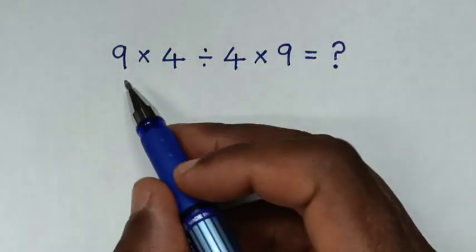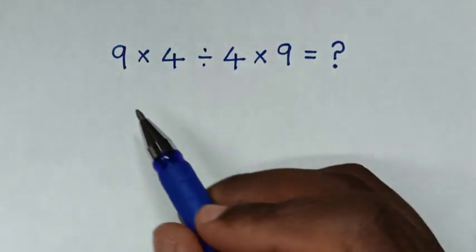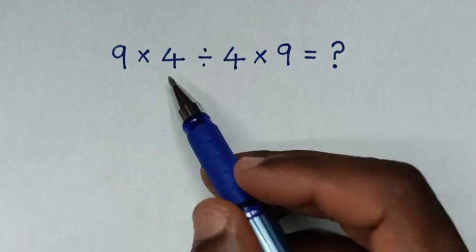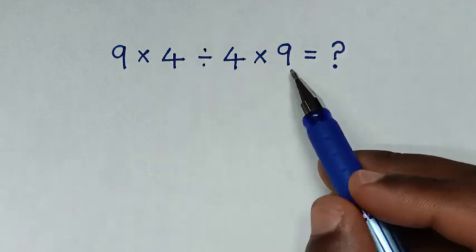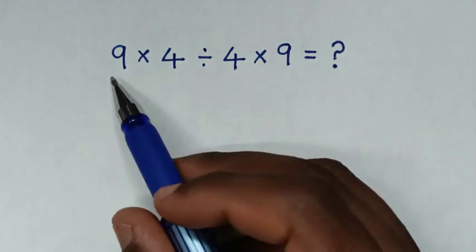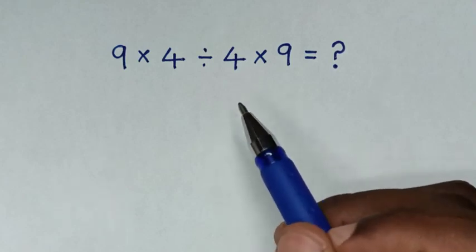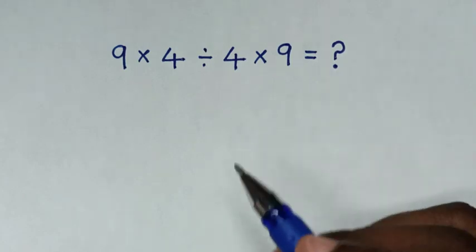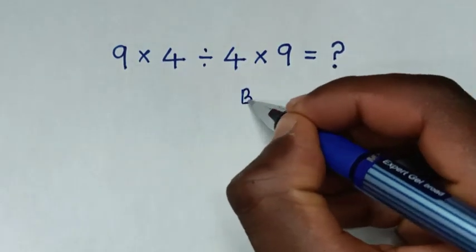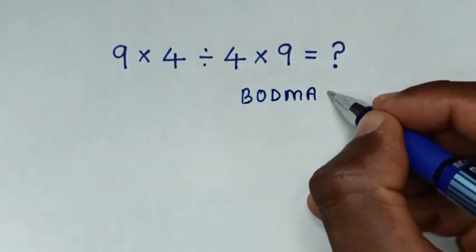Hello, you are welcome to solve this math problem which is 9 times 4 divided by 4 times 9. From this math problem, let's solve it by using the BODMAS rule.